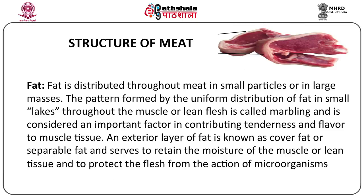The third component of the structure of meat is fat. Fat is distributed throughout the meat in small particles or in large masses. The distribution of fat in meat forms specific patterns on the surface of meat referred to as marbling. Marbling is an important indicator of quality in meat and is an important factor contributing to tenderness and flavor in muscle tissues.